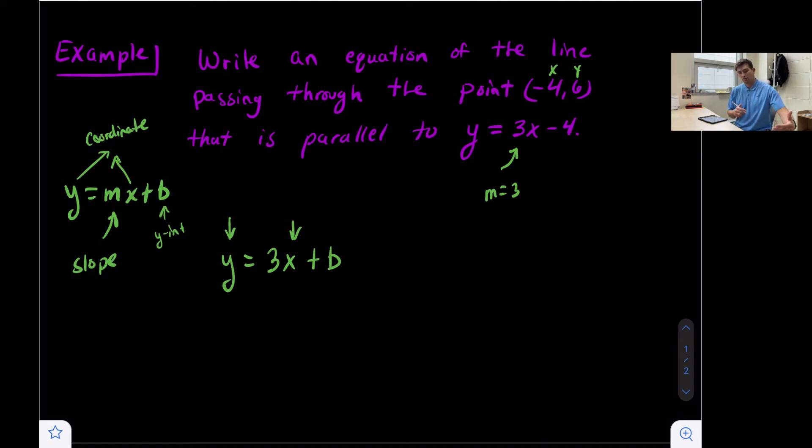So x = -4 and y = 6. We have 6 = 3(-4) + b. Three times negative four is -12, so 6 = -12 + b. To solve for b, we add 12 to both sides and get 18 = b.